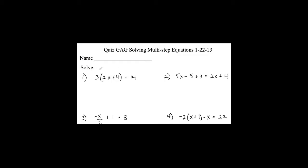The first step is the distributive property, so I'm going to multiply 3 times 2x and 3 times negative 4. So I get 6x, and 3 times negative 4 is negative 12, and that equals 14.